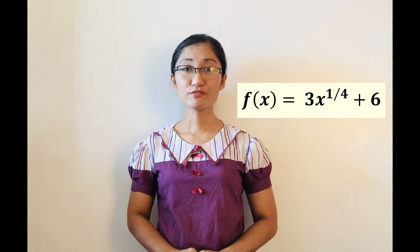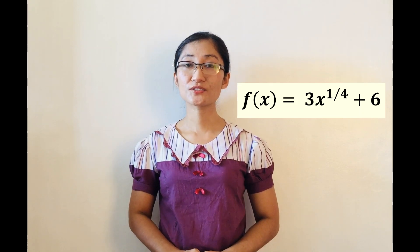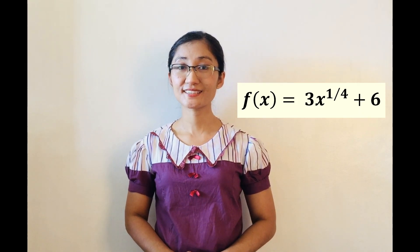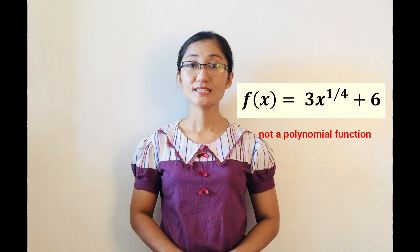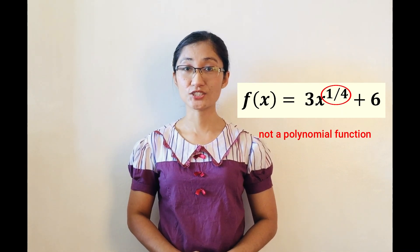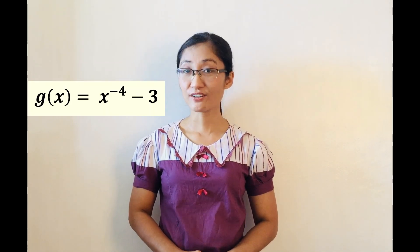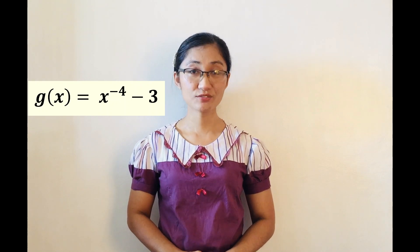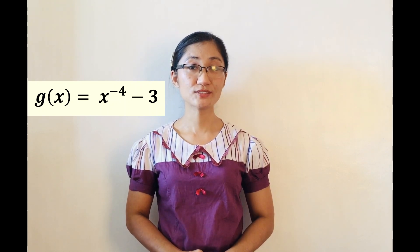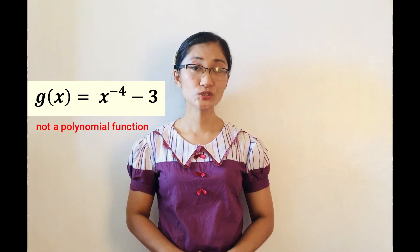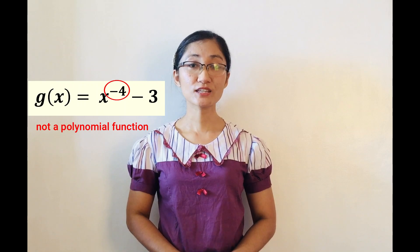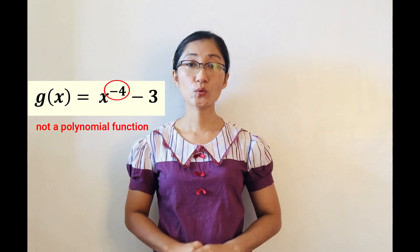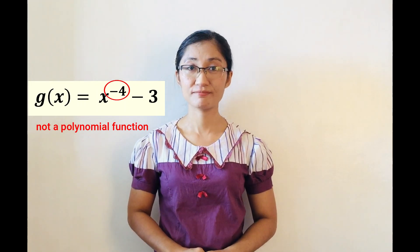But f(x) = 3x^(1/4) + 6 is not a polynomial function since 1/4 is not an integer. And g(x) = x^(−4) − 3 is also not a polynomial function since −4, though an integer, is negative.